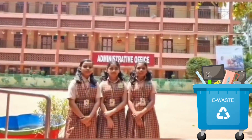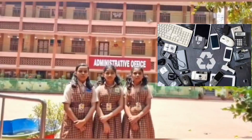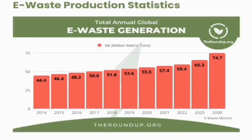E-waste, also known as electronic waste, is various forms of electric and electronic equipment that are no longer being used for their original purposes. 59.4 million metric tons of e-waste were generated in the year 2022 alone, with the average growing by 2 million metric tons per year. This means there are over 340 million metric tons of e-waste left on Earth as of 2023, and only 17.4 million metric tons have been properly collected and recycled.